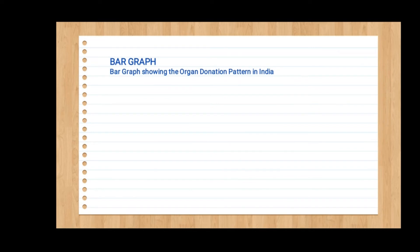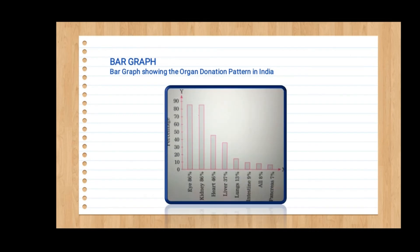Next is a bar graph, here showing the organ donation pattern in India. They have given percentages — for example, 86 percent. According to the organs: kidney, heart, liver, lungs, and intestine. According to the percentages, we have to make our bar graph.